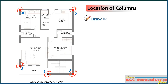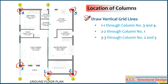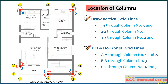Let us draw vertical grid line 1-1 through column numbers 3 and 4, grid line 2-2 through column number 1, and grid line 3-3 through column numbers 2 and 5. Similarly, draw horizontal grid line AA through column number 3, and grid line CC through column numbers 4 and 5.